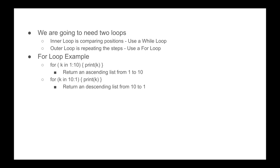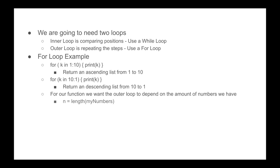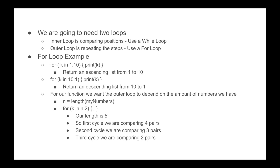For our function, we want the outer loop to depend on the amount of numbers we have. First, we say n is equal to length of the vector we created. Then our for loop will be k in n to 2, and we open our curly brackets and have all our code. In our example the length is 5, so the first cycle we're comparing four pairs, second cycle three pairs, third cycle two pairs, and the fourth and final cycle one pair. So we want k to be 5, 4, 3, and 2 — a descending sequence.